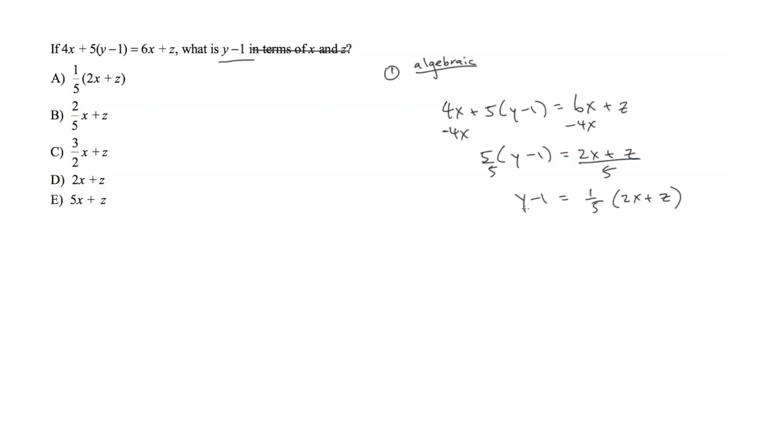So that's pretty simple, right? And it's a lot more simple because we decided to keep y minus 1 together instead of distributing it out. The answer choice in this case would be A, one-fifth times 2x plus z.